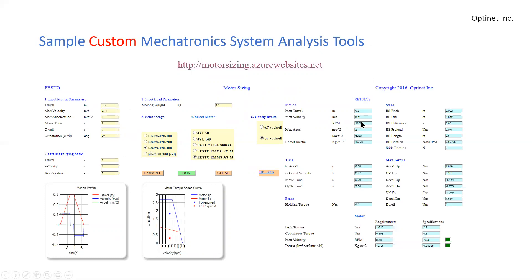The results show up in blue, as well as graphical results showing that the amplifier will provide output within the allowable values and the continuous values are within their allowable range. This is the motion profile that may have to be programmed into the controller, and this particular tool was developed for Festo Corporation.